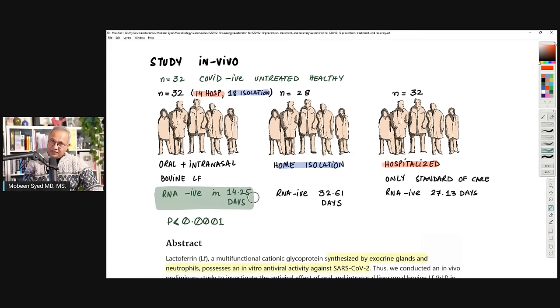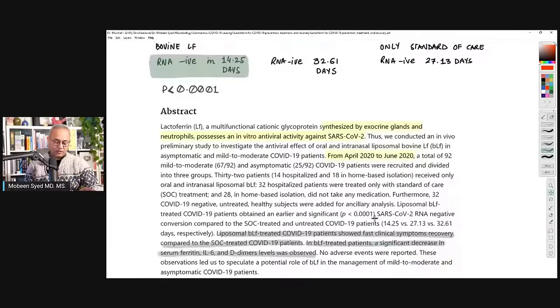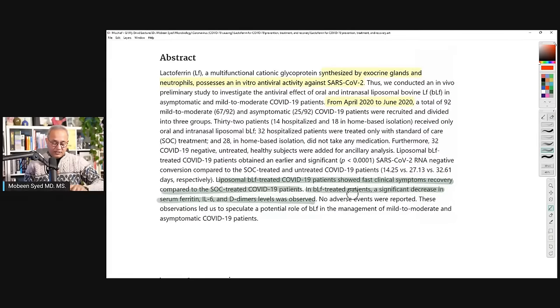The second group, no treatment, just stay at home. If you become severe, come to the hospital. The third group was in the hospital and was getting normal standard of care. The first group was receiving oral plus intranasal bovine lactoferrin. There are actually intranasal drops or sprays as well for lactoferrin. The recovery in this first group that was receiving lactoferrin, on average, the recovery was 14.25 days compared to recovery of people at home. Recovery meant RNA negative. The second group at home became RNA negative on average on 32 days. Third group, hospitalized, became RNA negative on 27.13 days. This group became RNA negative within 14 days. Faster accelerated recovery.